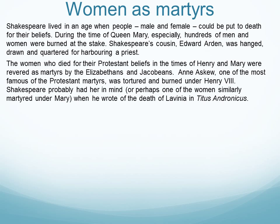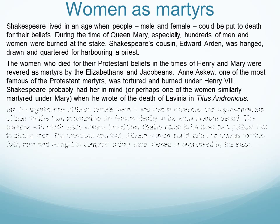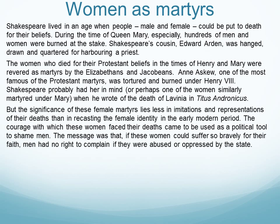Anne Askew was tortured and burned under Henry VIII, and Shakespeare probably had her in mind when he wrote of the death of Lavinia in 'Titus Andronicus' — he would be thinking of the suffering of Anne Askew when he wrote Lavinia's death. But it's not so much whether he thought about those martyrs in creating his characters; what's really important is the whole way that female-male identity was recast and perceived in the early modern period.